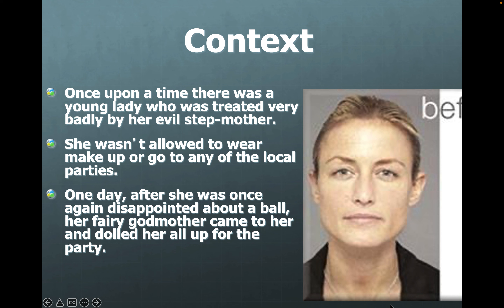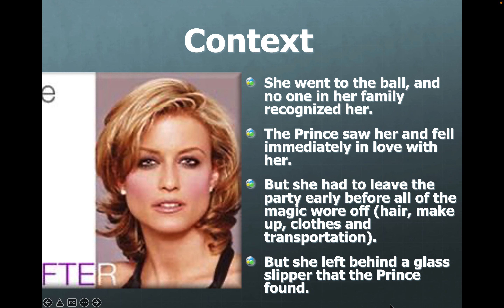Once upon a time, there was a young lady who was treated very badly by her evil stepmother. Her father didn't allow her to wear makeup or go to any of the local parties. One day after she was once again disappointed about a ball, her fairy godmother came to her and dolled her up for the party. This is what she looked like before, and that's what she looked like afterwards. She went to the ball and no one in her family recognized her because that's the way she normally looked. The prince saw her and fell immediately in love with her. But she had to leave the party early before all the magic wore off — her hair, makeup, clothes, and transportation. But she left behind a glass slipper that the prince found.